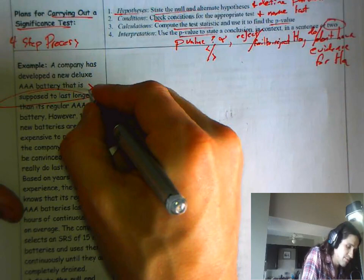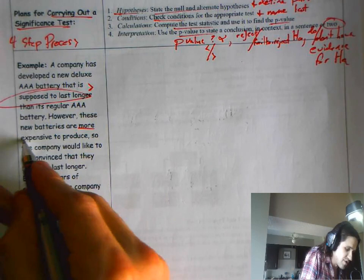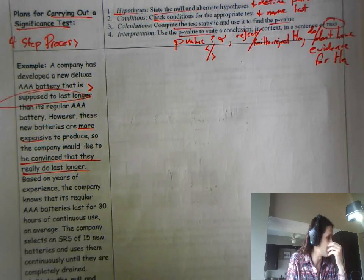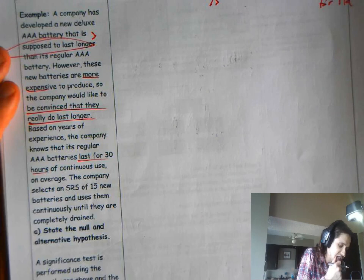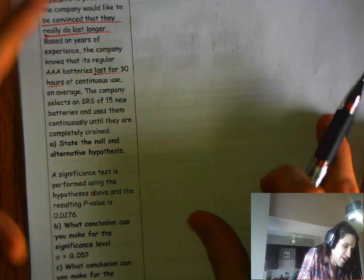So I'm going to circle that statement supposed to last longer. I see that and I'm thinking I'm going to put a greater than sign in here somewhere. However, these new batteries are more expensive. So they want to be convinced that they really do last longer. It's regular batteries last for 30 hours. The company selects a simple random sample of 15 and uses them until they're completely drained.